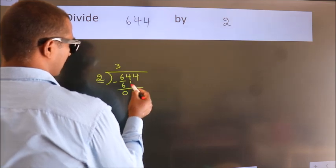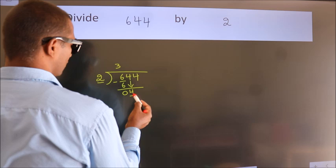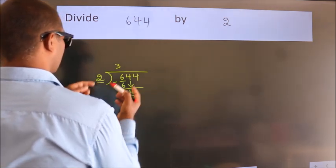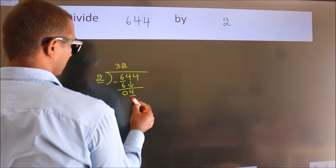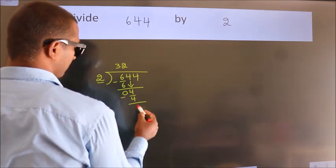After this, bring down the beside number. So 4 down. When do we get 4? In 2 table. 2 times 2 is 4. Now we subtract. We get 0.